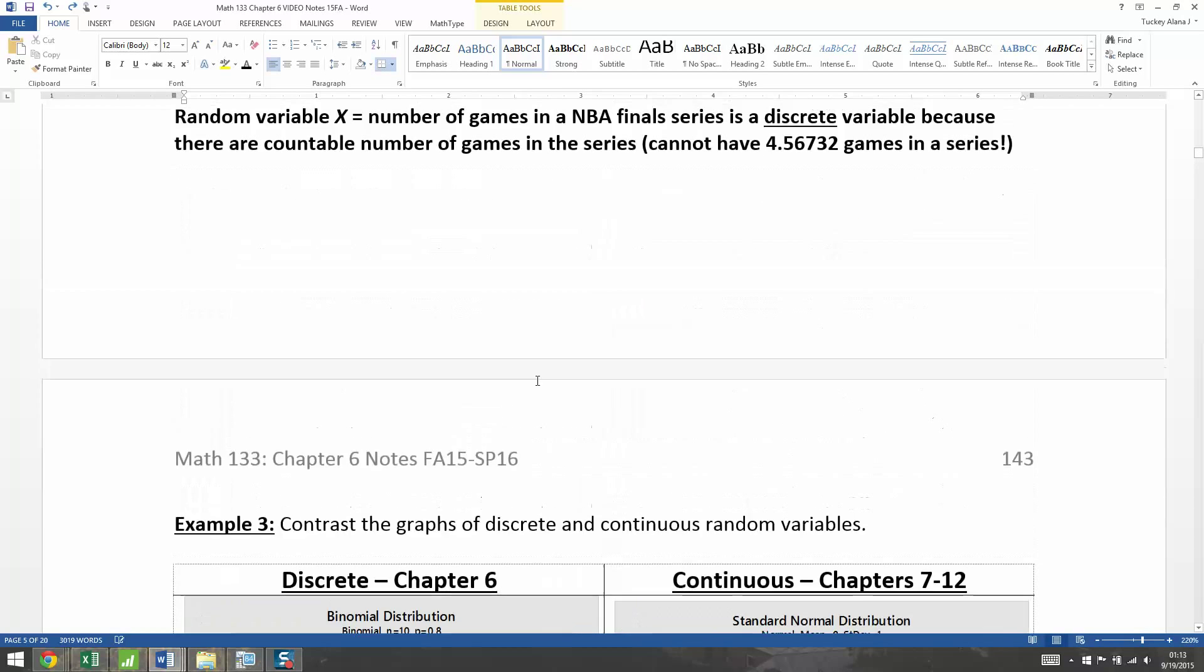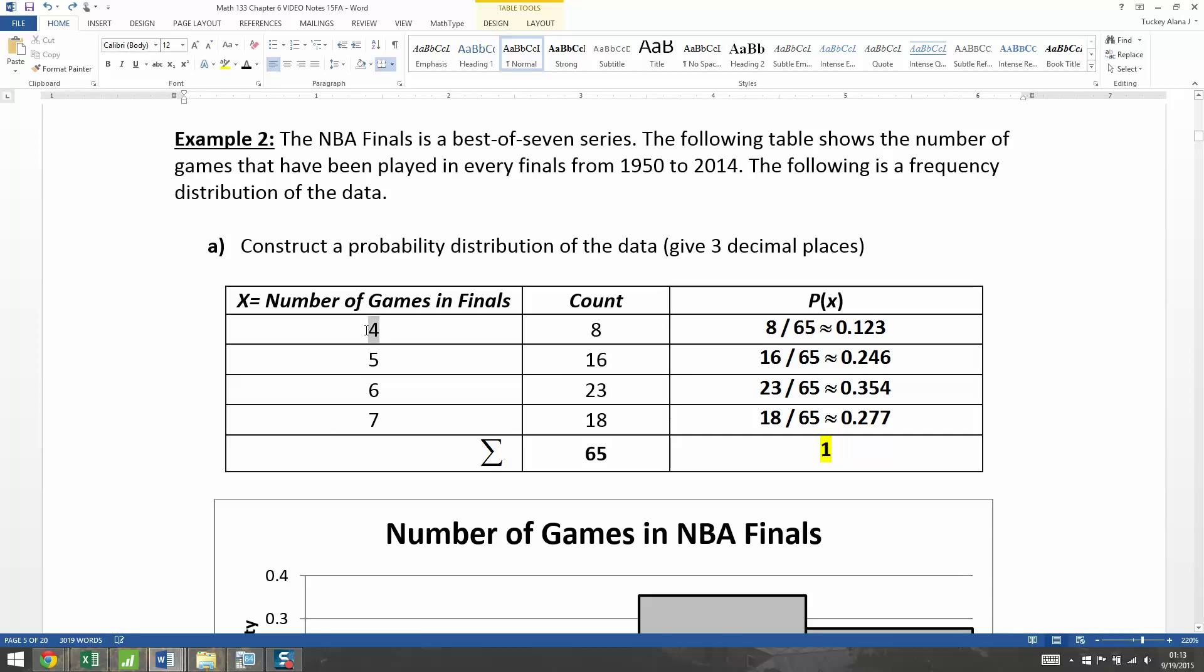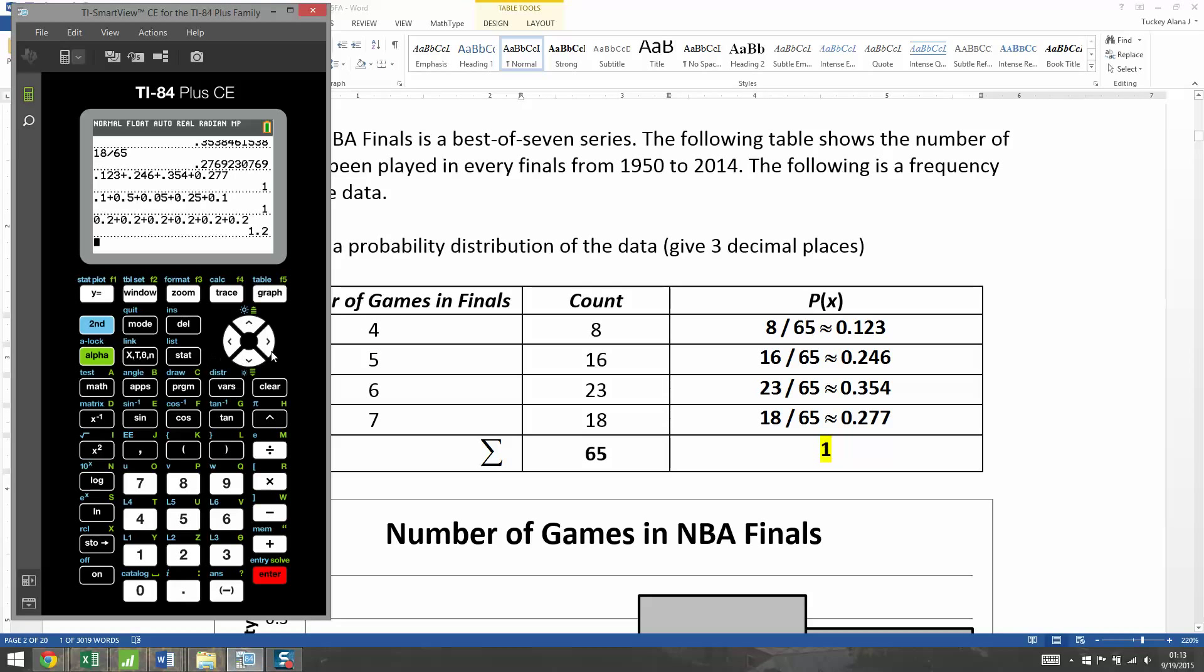So if you wanted to do this by hand, all you have to do is multiply each number of games times its probability, and then you add them. So you go 4 times 0.123 plus 5 times 0.246 plus 6 times 0.354 plus 7 times 0.277. That's how to do it by hand. You get 5.785.